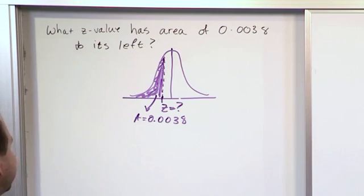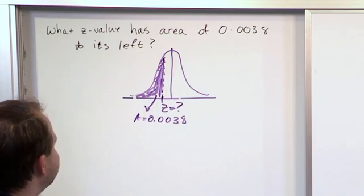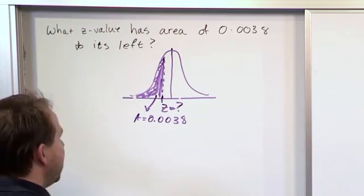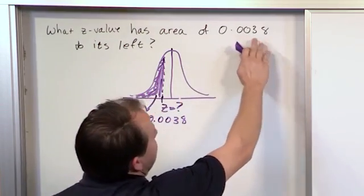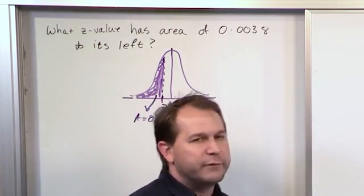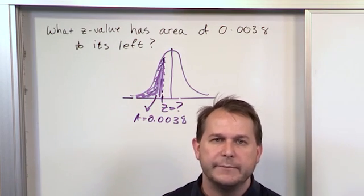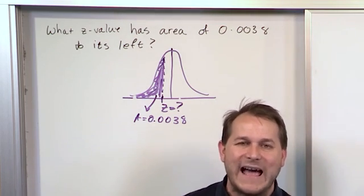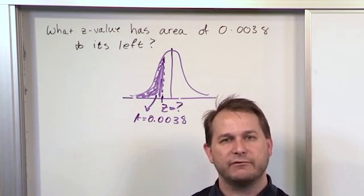We want to find what value of Z that is, and since it's all defined to be the left, toward the left there, we can just look it up. So go in your table and look for 0.0038. It might take you a little while to find it, but eventually you're going to find an exact value for 0.0038.